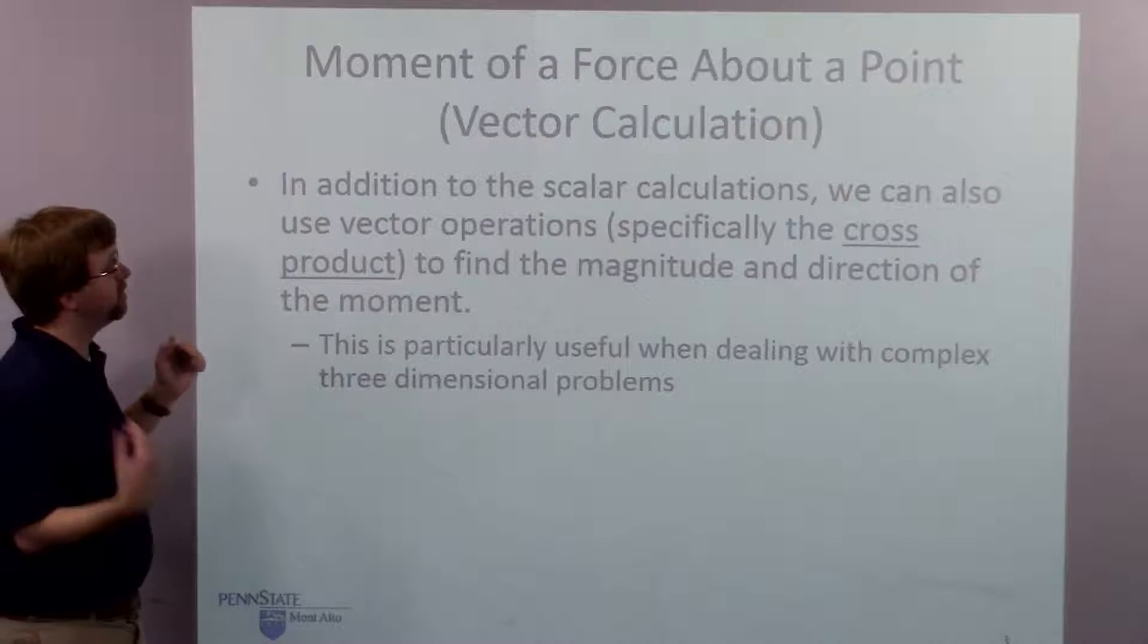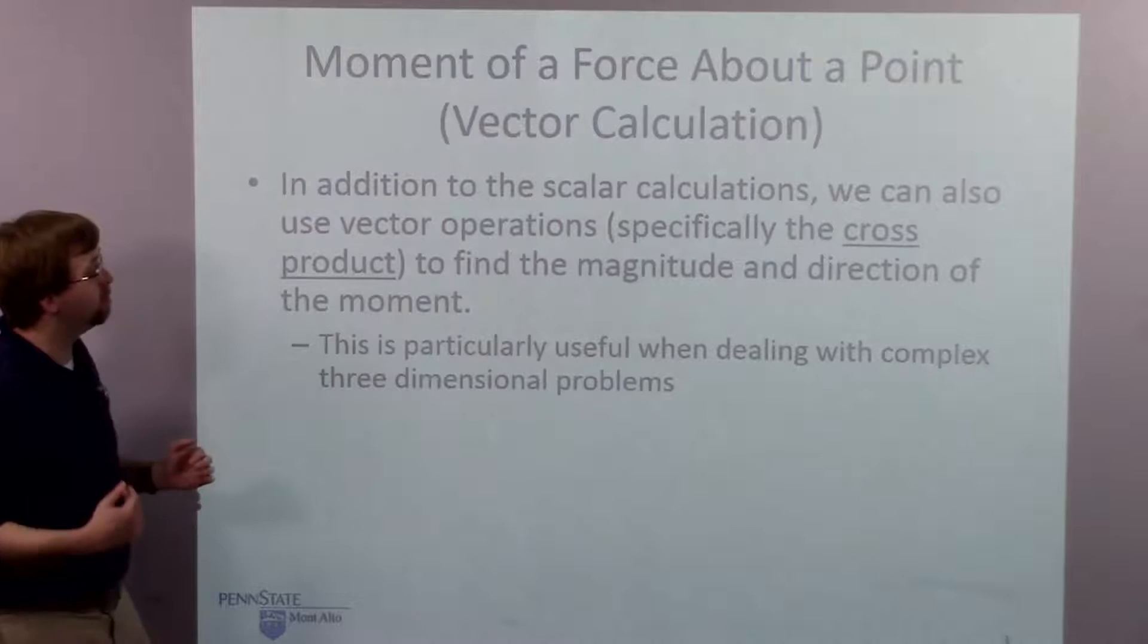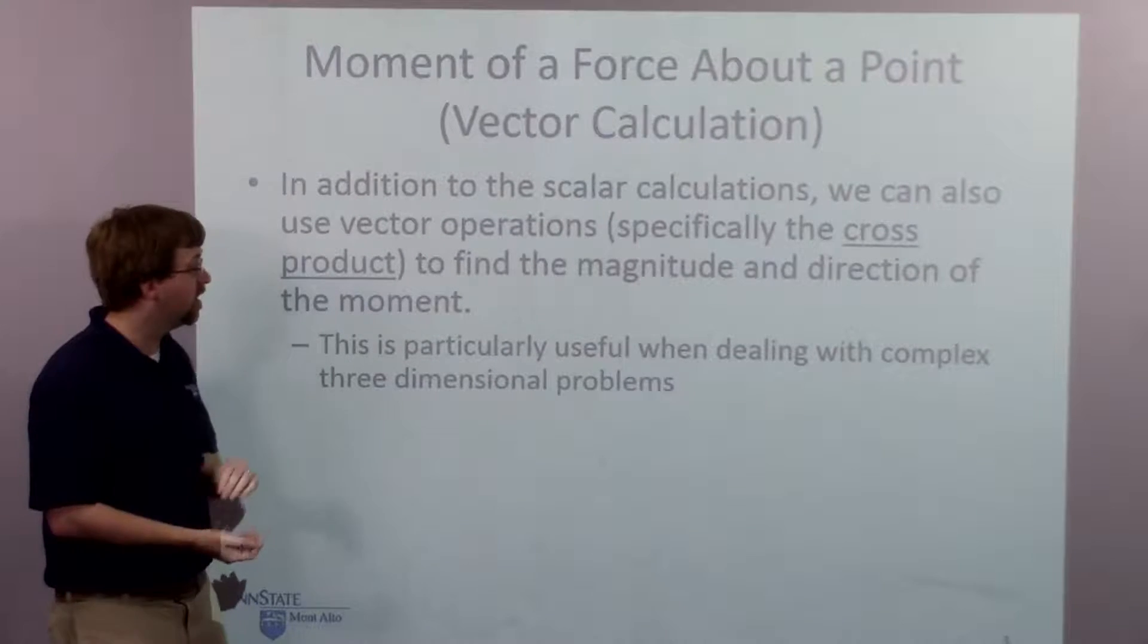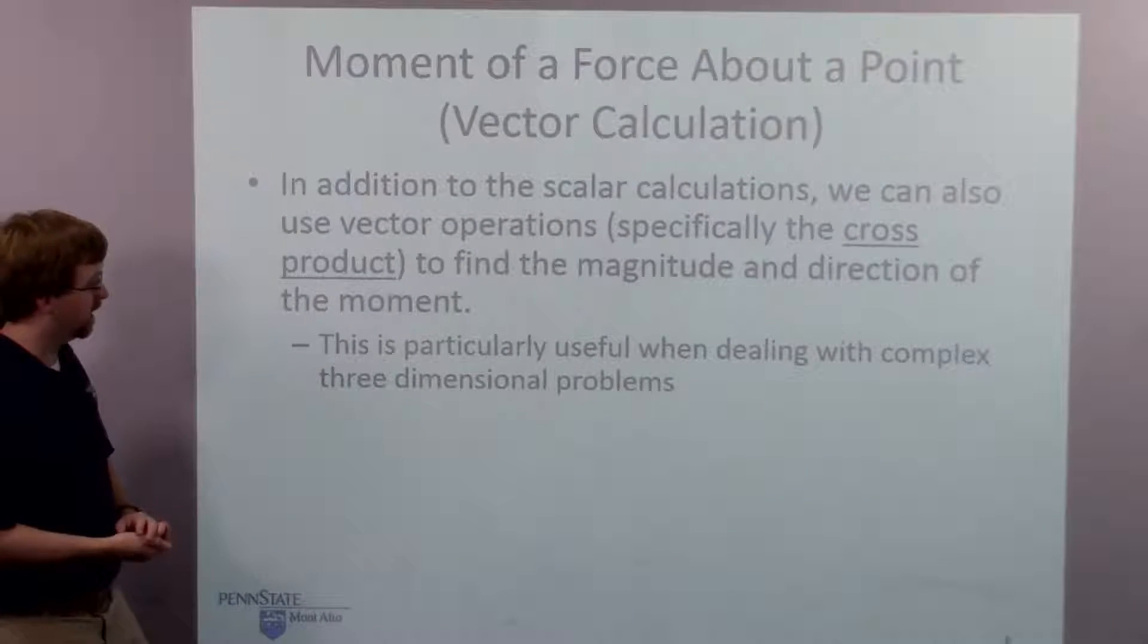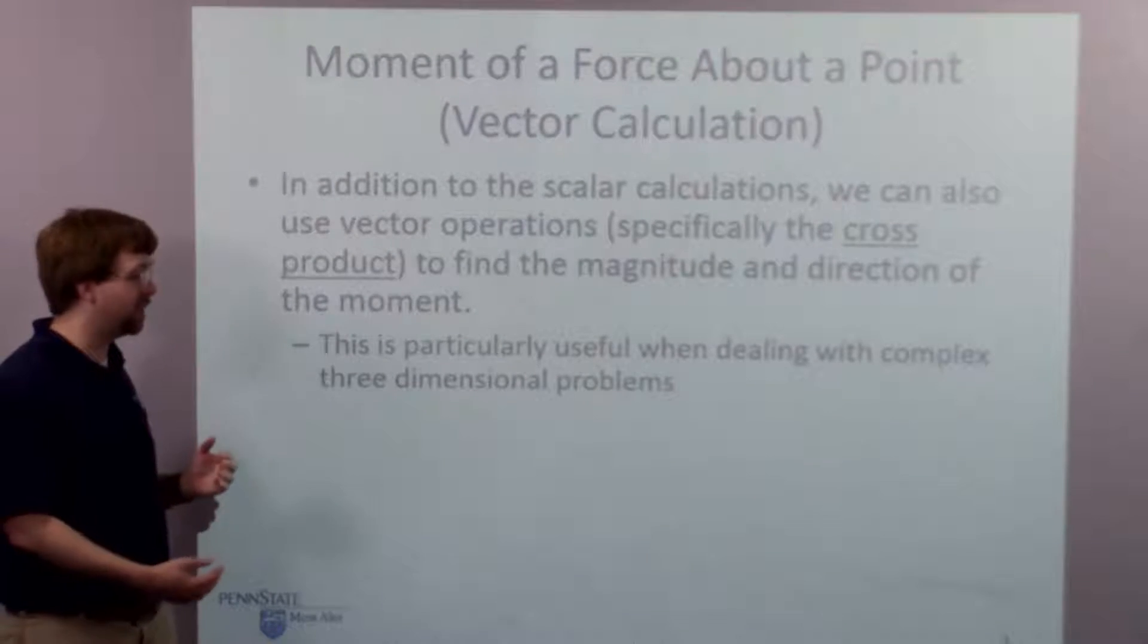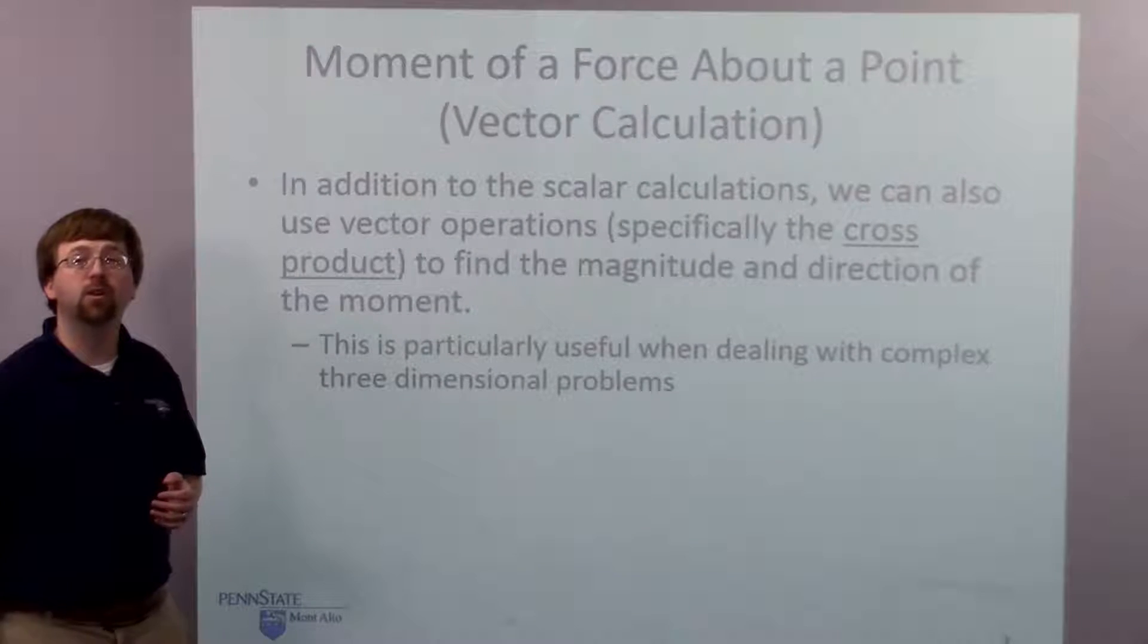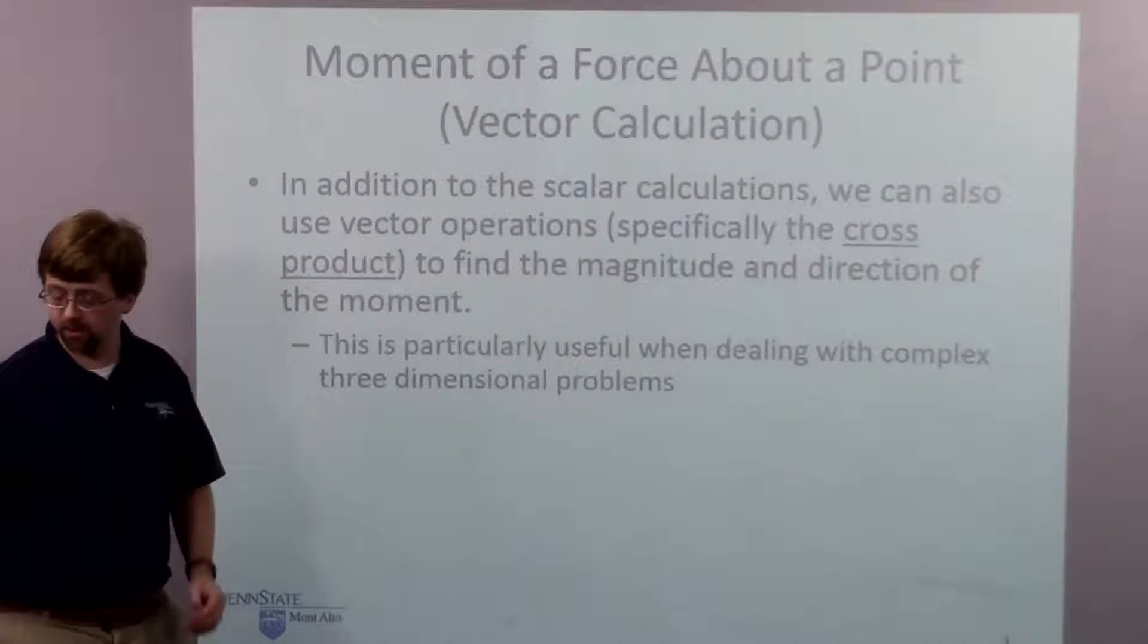So we're going to use a vector operation, specifically the cross product, as a way to find the magnitude and the direction, we find both at once for a moment. And so this is particularly useful when we're dealing with complex problems in three dimensions, where finding the scalar operations, finding these minimum distances, is rather difficult.